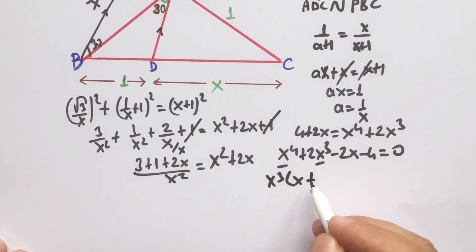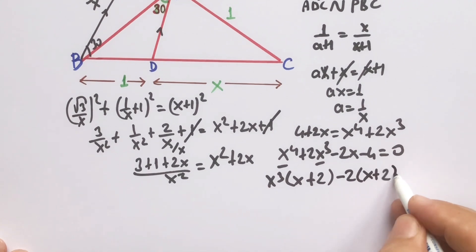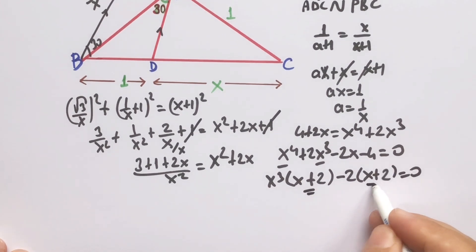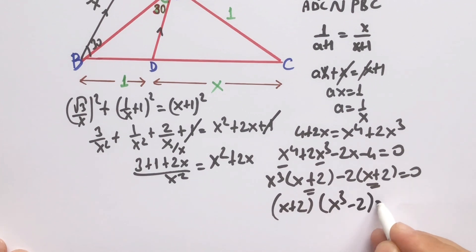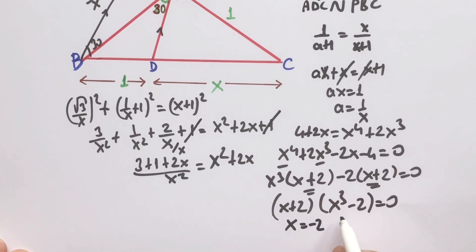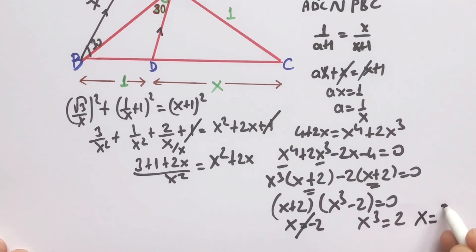Factoring: x³(x + 2) − 2(x + 2) = 0. These share a common factor, so: (x + 2)(x³ − 2) = 0. Therefore x = −2 or x³ = 2. But length can't be negative, so x = ∛2.